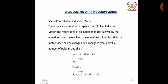As we know, the rotor speed Nr equals (1 - s) × Ns, where Ns is synchronous speed, and Ns = 120f / P. Therefore, Nr = (120f / P) × (1 - s). From this equation, it is clear that the motor speed can be changed by a change in frequency f, number of poles P, and the slip s.